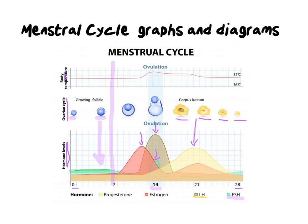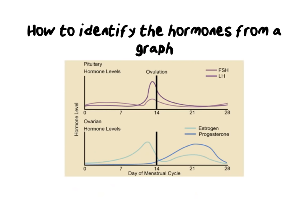What I want you to be able to do is identify what happens at each stage — roughly every seven days. This graph is helpful because it separates the pituitary hormones from the ovarian hormones, unlike the previous graph which had both sets on top of each other. Let's start with FSH, because it is the hormone that starts the whole process. FSH is represented by the paler purple line, and it is very gentle in its increase.